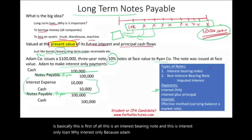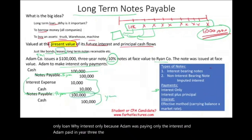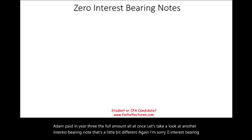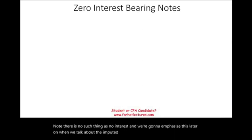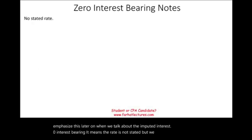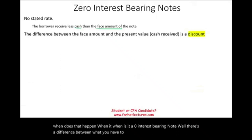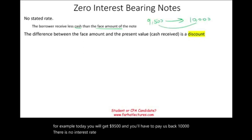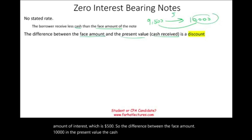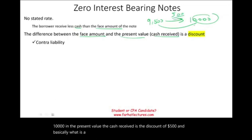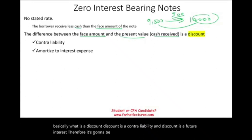Zero interest-bearing note: there is no such thing as truly no interest. When the rate is not stated, we can still find out what the rate is. The borrower will receive less cash today than the face amount. For example, today you get $9,500 but must pay back $10,000 — the $500 difference is the interest. The difference between the face amount ($10,000) and the present value (cash received) is the discount of $500. Discount is a contra liability representing future interest, so it gets amortized to interest expense.